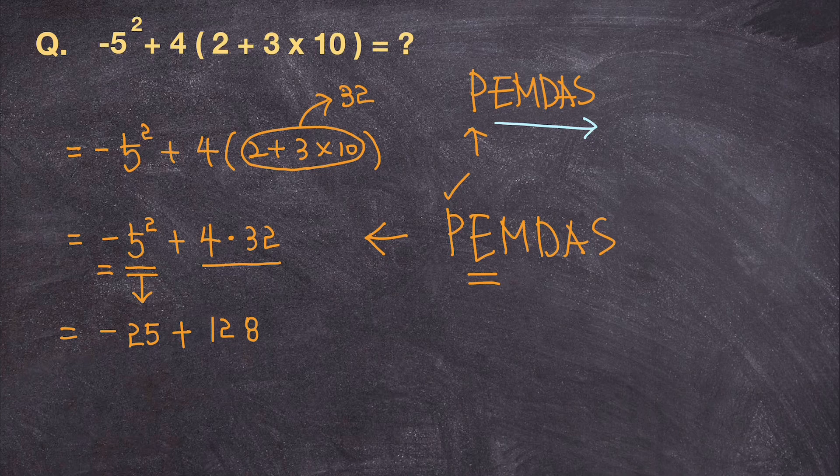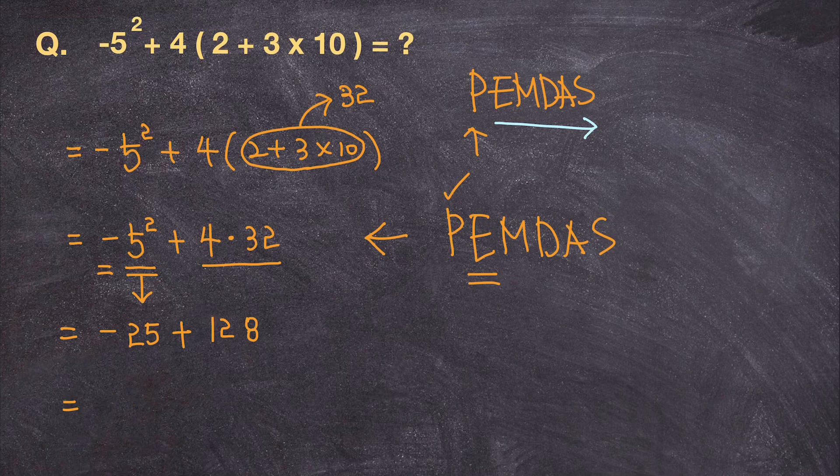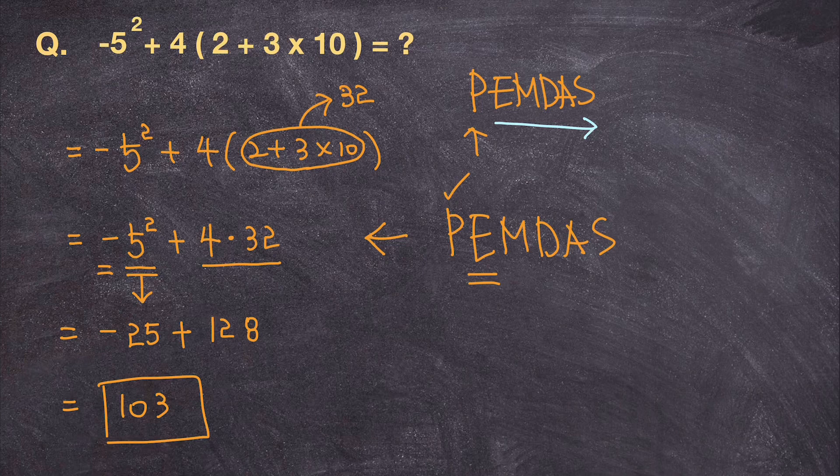So this is what I get after squaring and multiplying 4 times 32. And the last step is to just add negative 25 with positive 128. That's equal to 120. Sorry. 103. And 103. That's correct, right? 103 is going to be my final answer to this problem.